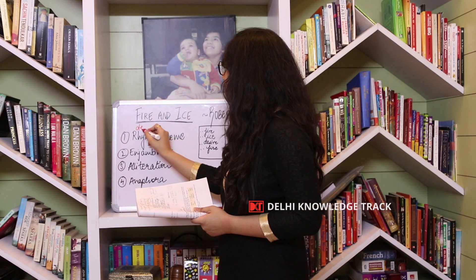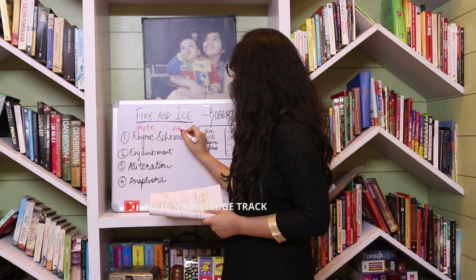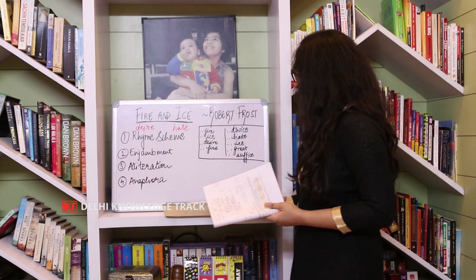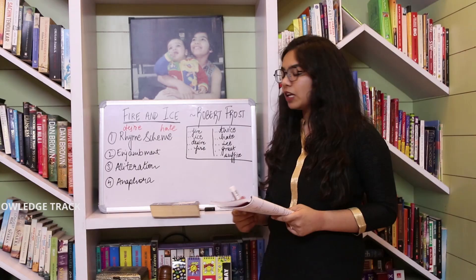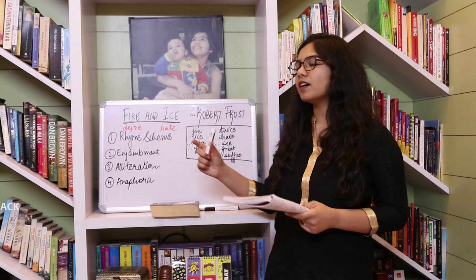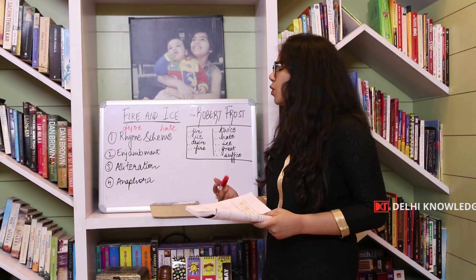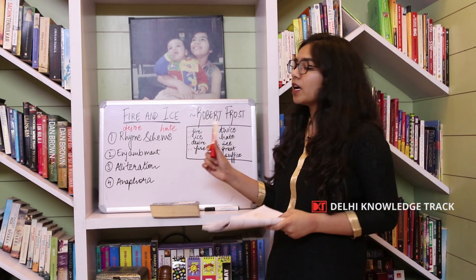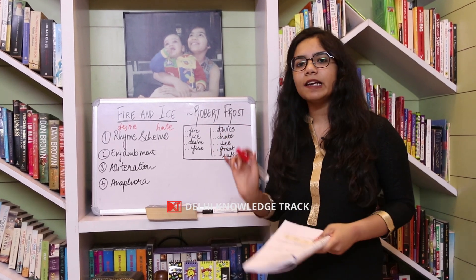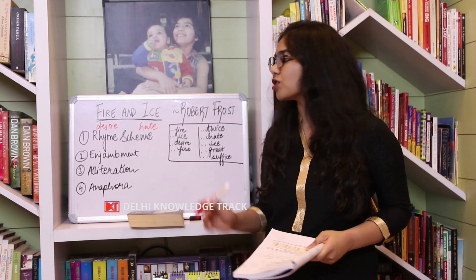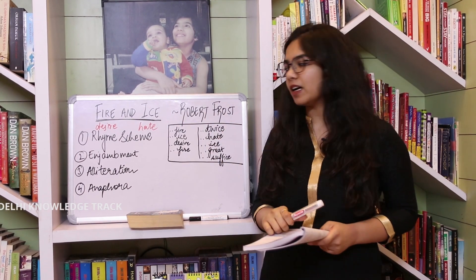However, when we read between the lines and read the whole poem, we see usage of terms like 'I've tasted of desire' and 'I think I know enough of hate.' This tells you that fire and ice are not just used to depict the burning or flooding of the world. Fire is used to represent desire, and ice is used to represent hate. These are two very strong and powerful emotions represented by fire and ice.